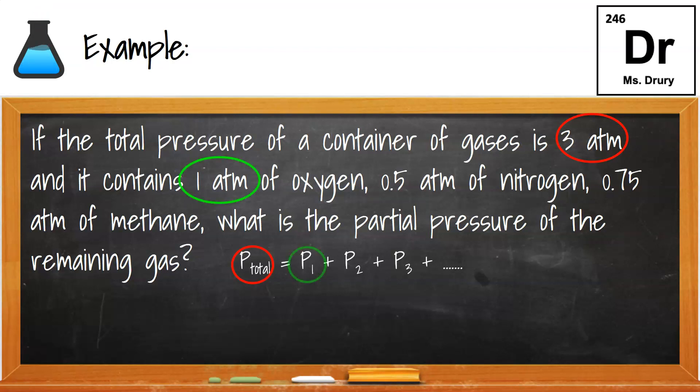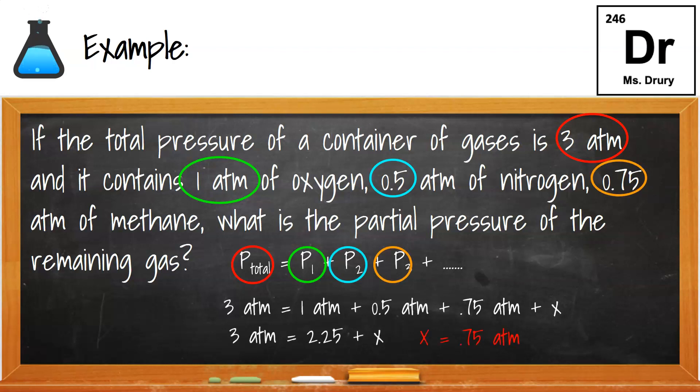So notice that the 3 atmospheres was the first pressure total. Pressure 1 is 1 atmosphere. Pressure 2 is 0.5, and pressure 3 is 0.75. We need to figure out the rest, the dot, dot, dot. So if we subtract them out, we get an answer of 0.75, the remaining gas.